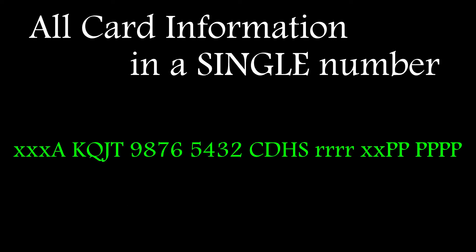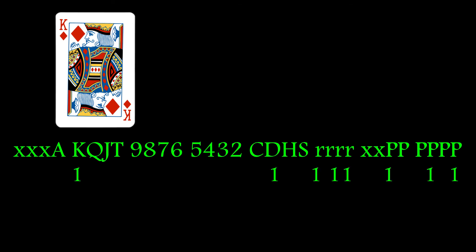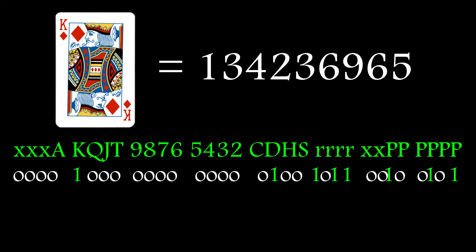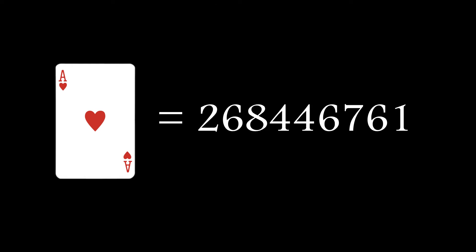By way of an example here is the encoding for the king of diamonds. Bits are set for the king card identifier, the diamond suit as well as the rank and prime number. All that equates to a very large number which now has encoded within it all the information we need and it can be extracted using bit masks. This only needs to be done once and is repeated for all cards in the deck.